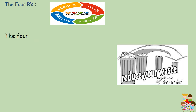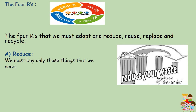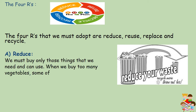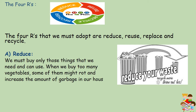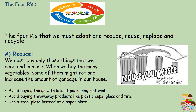The 4 R's that we must adopt are reduce, reuse, replace and recycle. A. Reduce: We must buy only those things that we need and can use. When we buy too many vegetables, some of them might rot and increase the amount of garbage in our house. Avoid buying things with lots of packaging material. Avoid buying throwaway products like plastic cups, glass and tins. Use a steel plate instead of a paper plate.